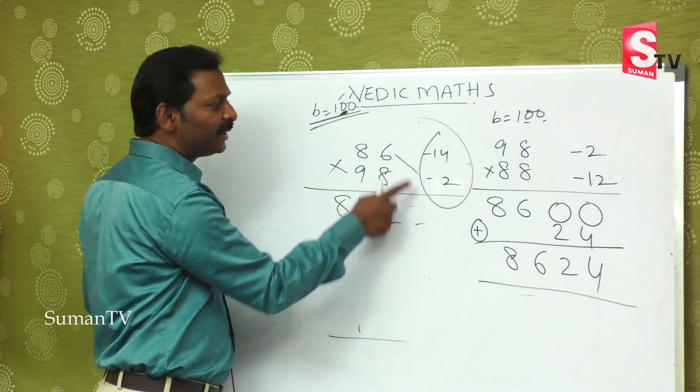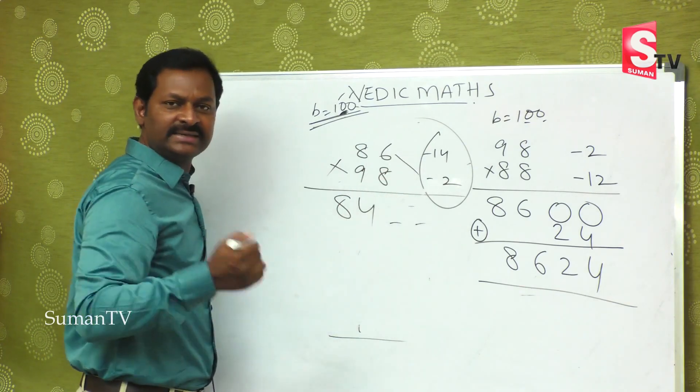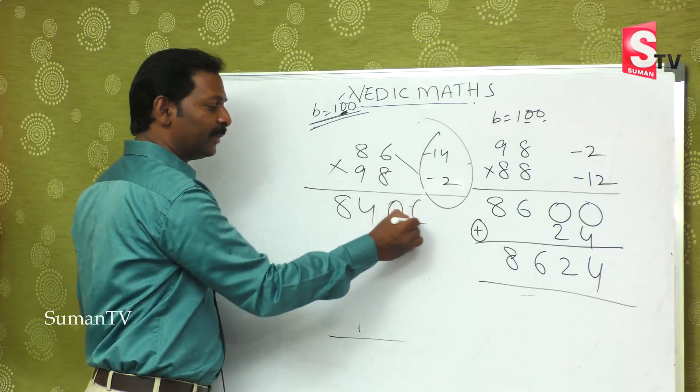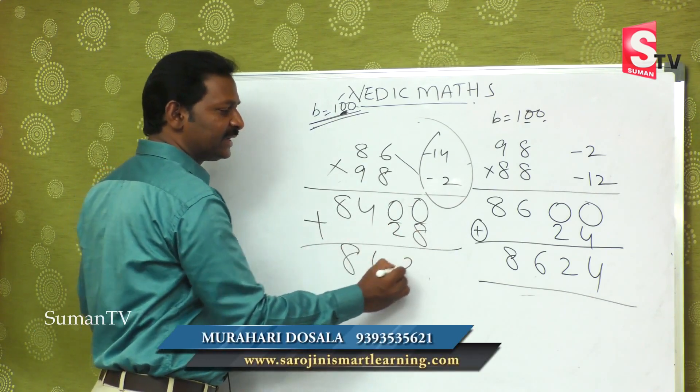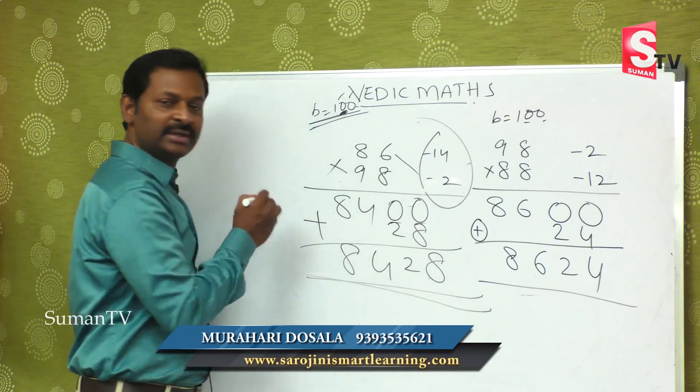14 × 2 is equal to 28. If you are equal to 28, you will have minus and minus. You will have plus. You can put 00 plus 28. Direct 28. You will have one answer.